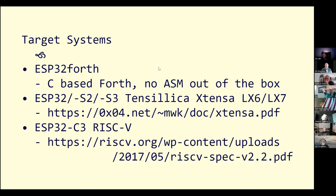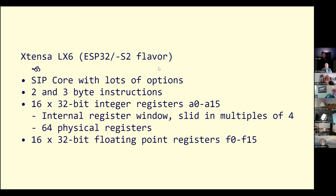ESP32 Forth actually supports a number of variations. In the ESP32 there's both the Tensilica Xtensa instruction set, and now with the ESP32-C3 there's also a RISC-V. They're each kind of interesting and separate machines. The Xtensa LX6, which is in the original ESP32, is a software IP core with a whole bunch of options. The set of options in Xtensa include support for two and three byte instructions, and it has a CPU mode for supporting an internal register window.